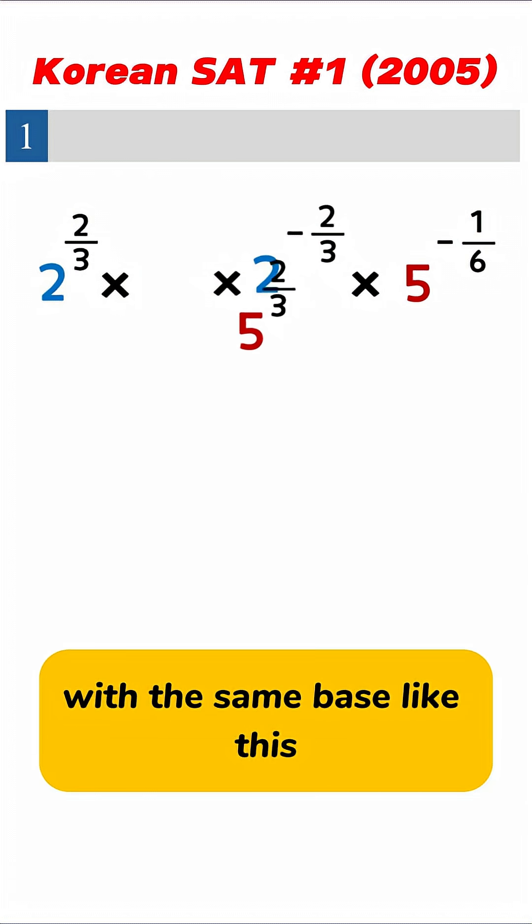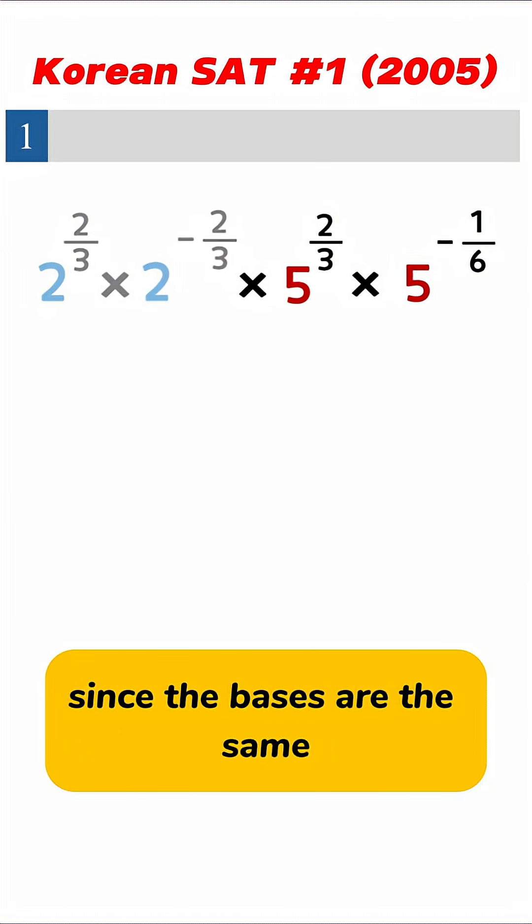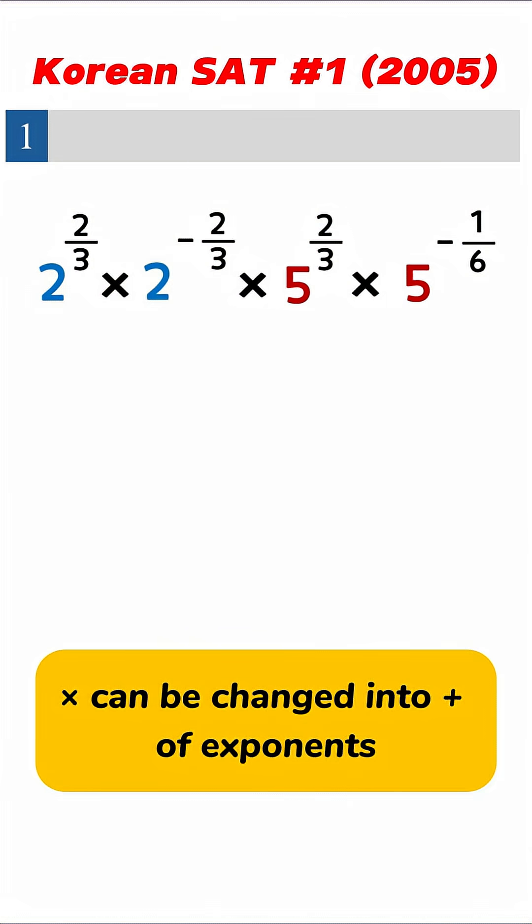Then, let's group terms with the same base like this. Now, since the bases are the same, multiplication can be changed into addition of exponents.